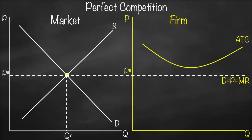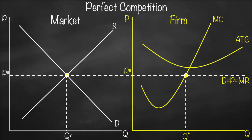The last scenario is when price is lower than average total cost. Here, the average total cost curve is above the price, demand curve, or marginal revenue horizontal line. Marginal cost intersects average total cost at its minimum. The profit-maximizing output is where marginal revenue equals marginal cost, and at that intersection I get Q*.